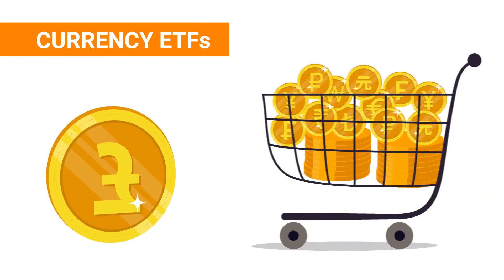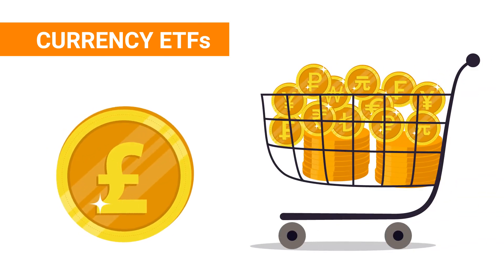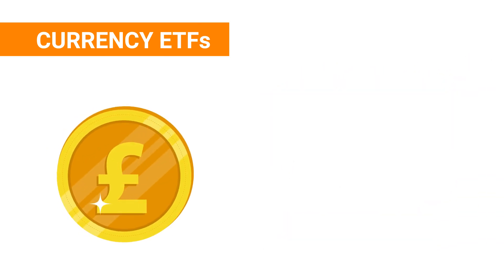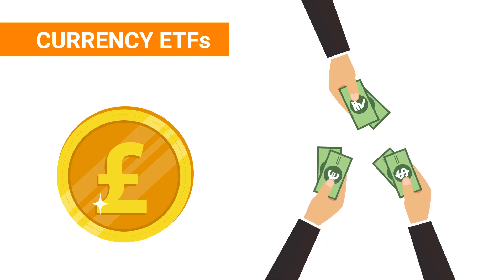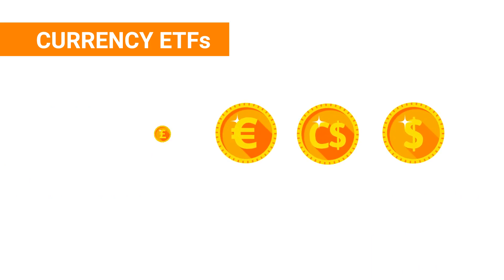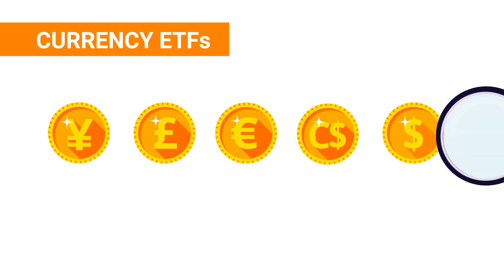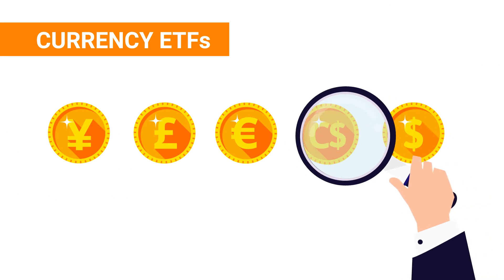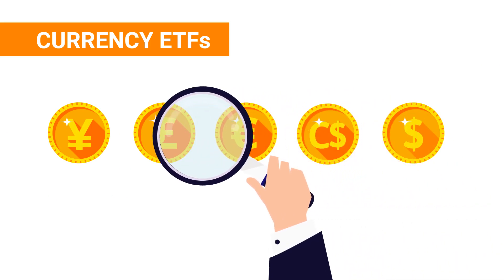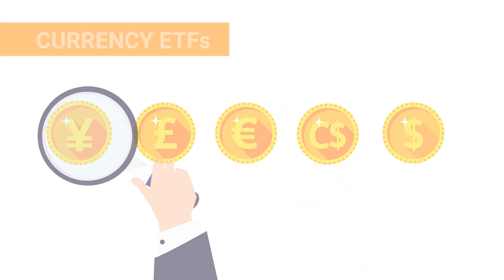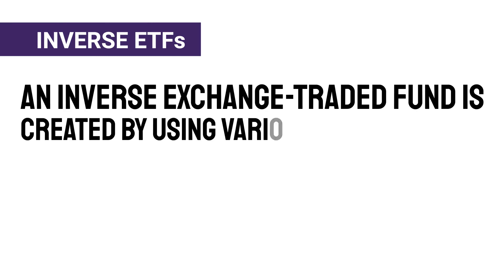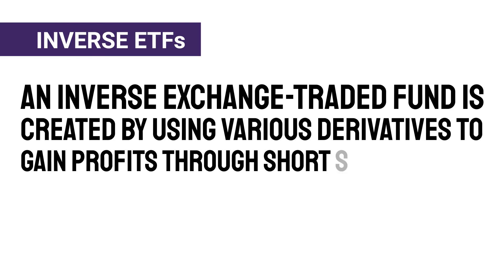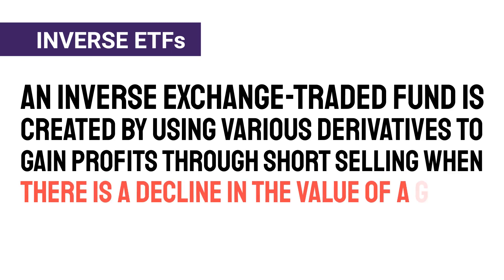Currency ETFs are invested in a single currency or a basket of various currencies, and are widely used by investors who wish to gain exposure to the foreign exchange markets without directly trading futures or the forex market. These ETFs usually track the most popular international currencies such as the US dollar, Canadian dollar, euro, British pound, and Japanese yen. Inverse ETFs are created by using various derivatives to gain profits through short selling when there is a decline in the value of a group of securities or a broad market index.